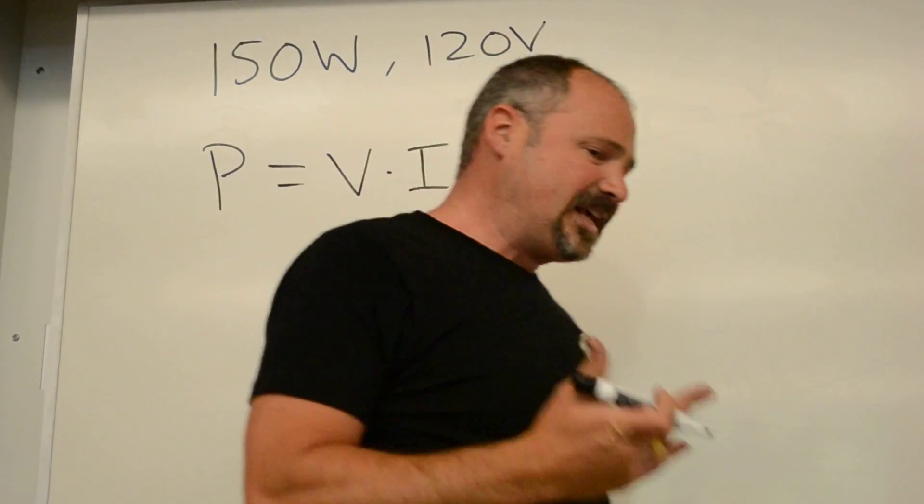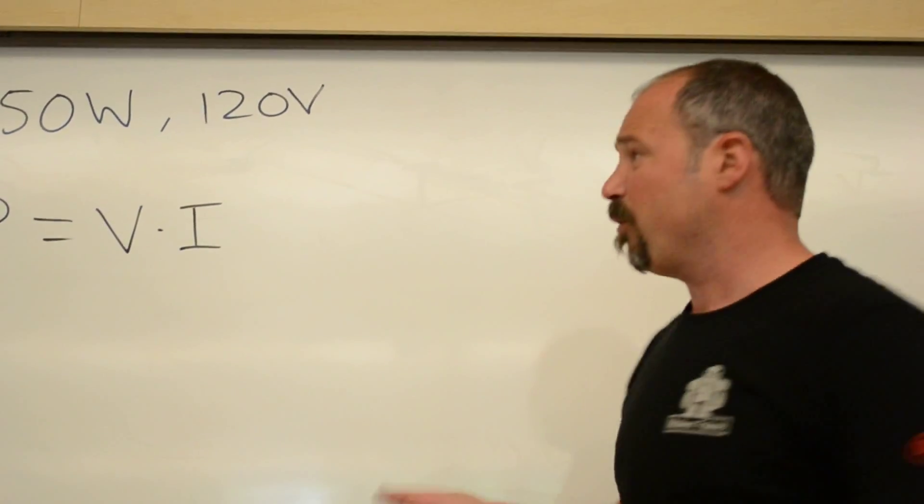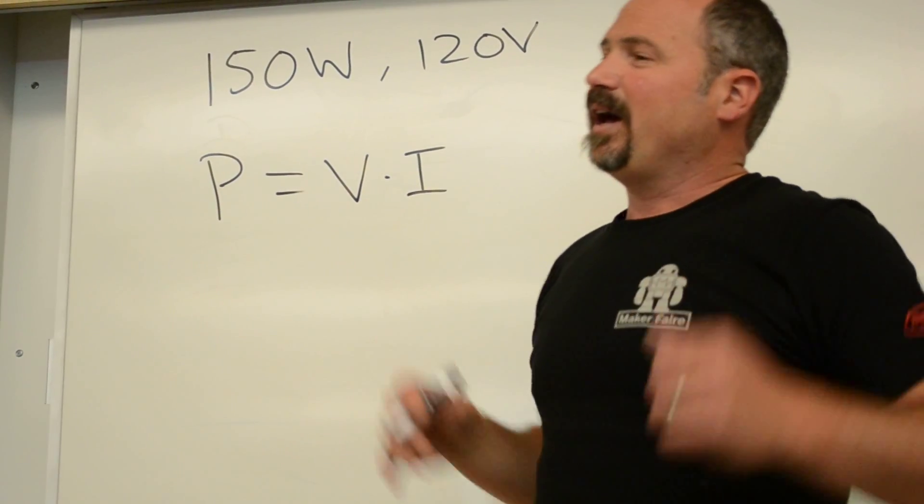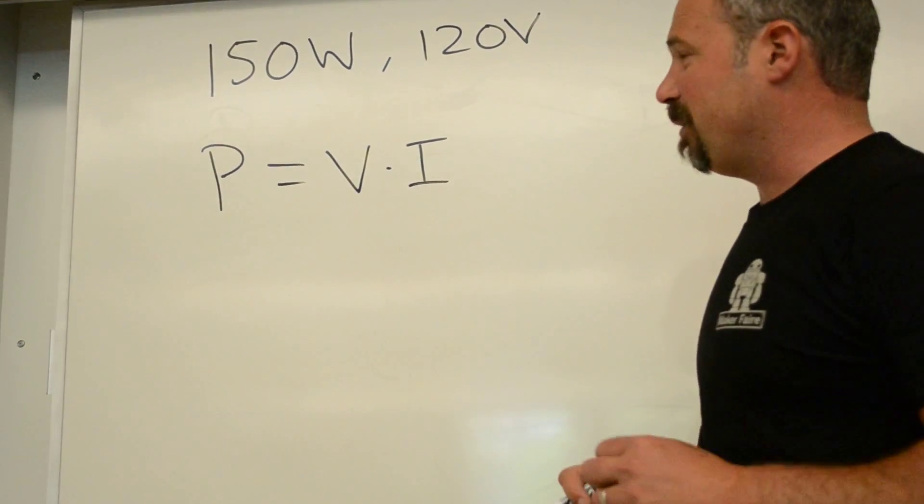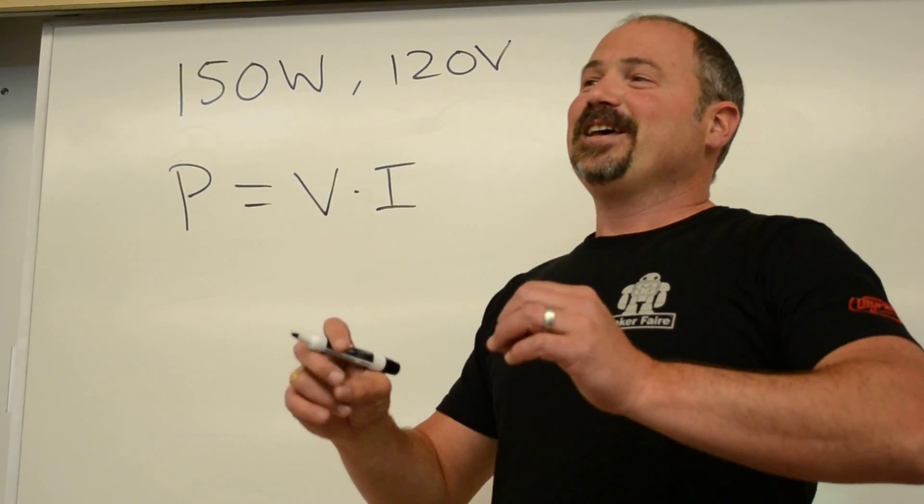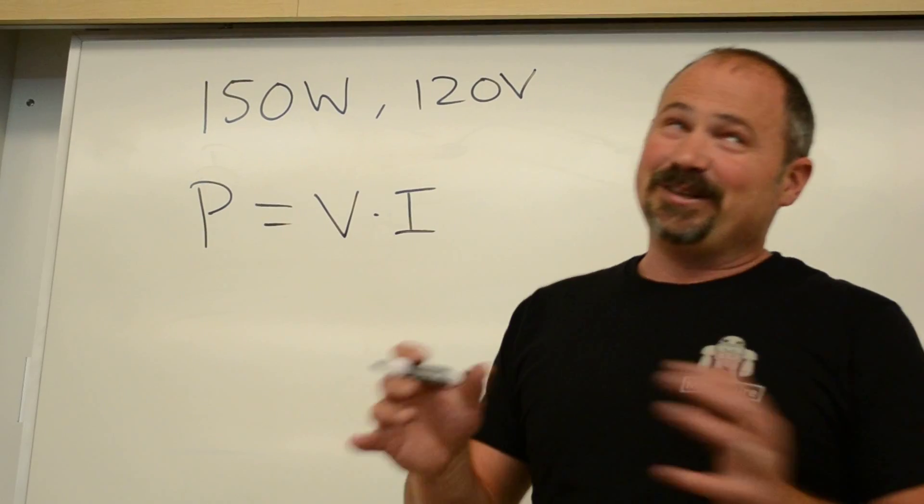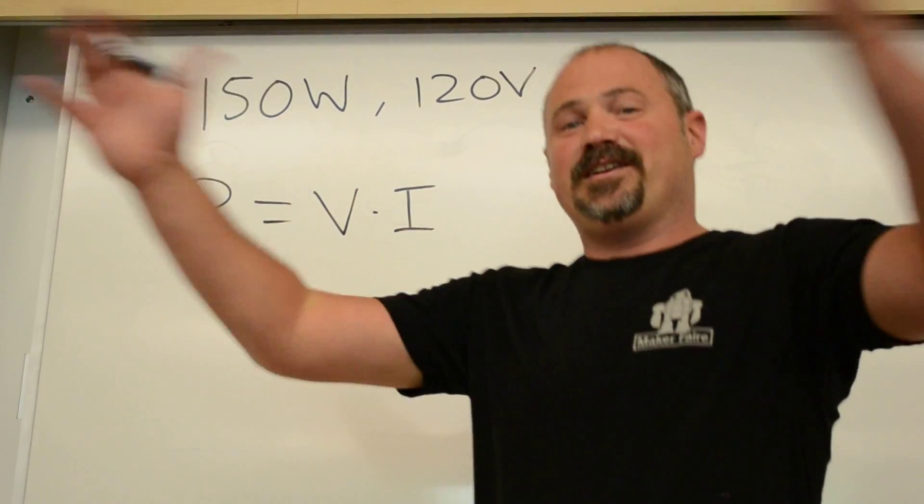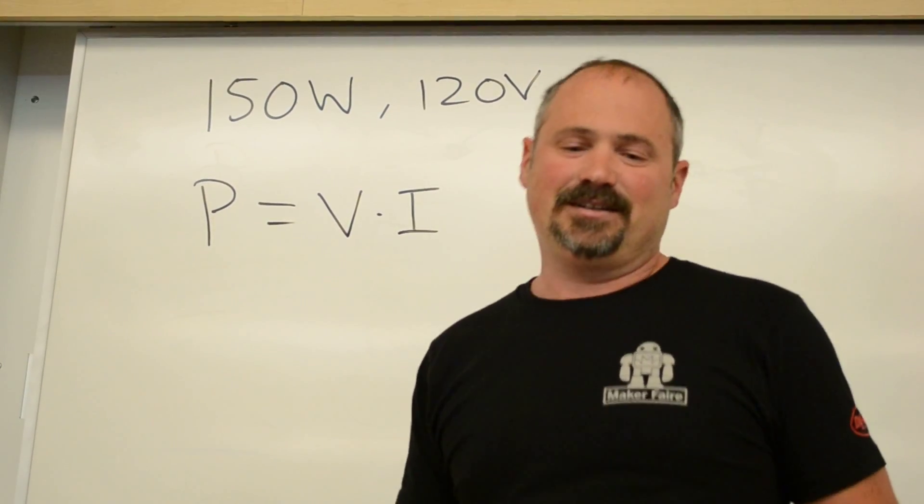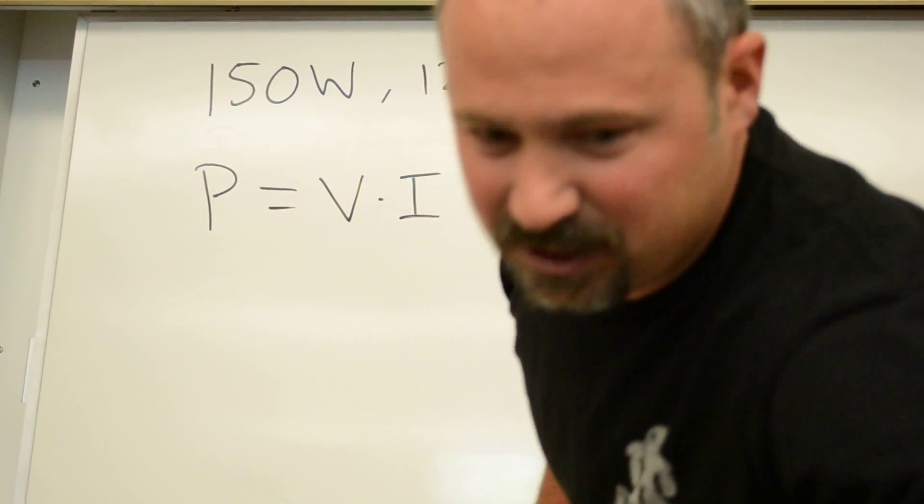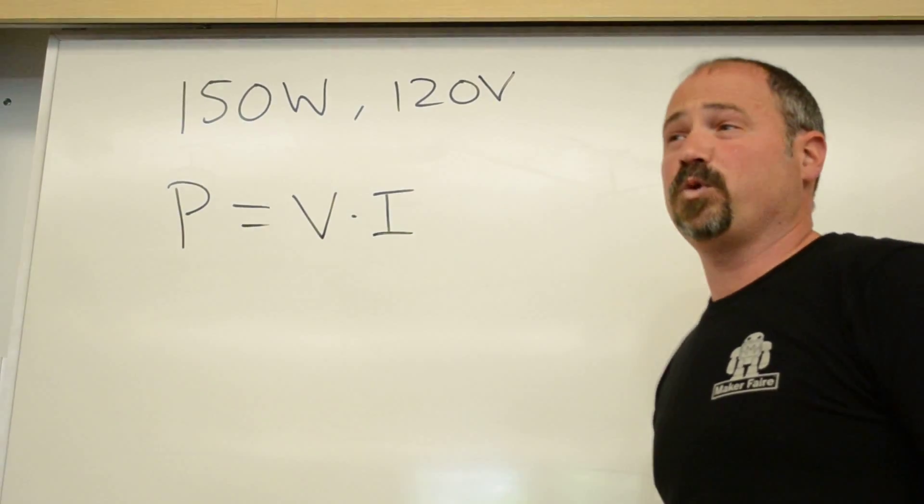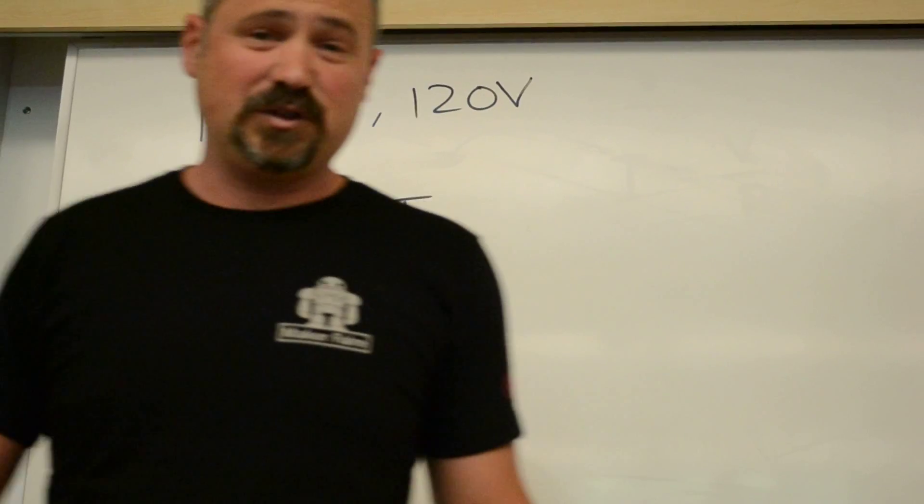The power tells you the brightness of the light bulb. Power is literally the joules radiated per second, or I should be more honest, power is the amount of energy, the number of joules per second. Some of that, actually the lesser fraction, is radiated as light, and the majority is radiated as heat. And that's why these tungsten light bulbs are inefficient. You should use fluorescent or LED light bulbs where a greater percentage of the power goes to visible light.